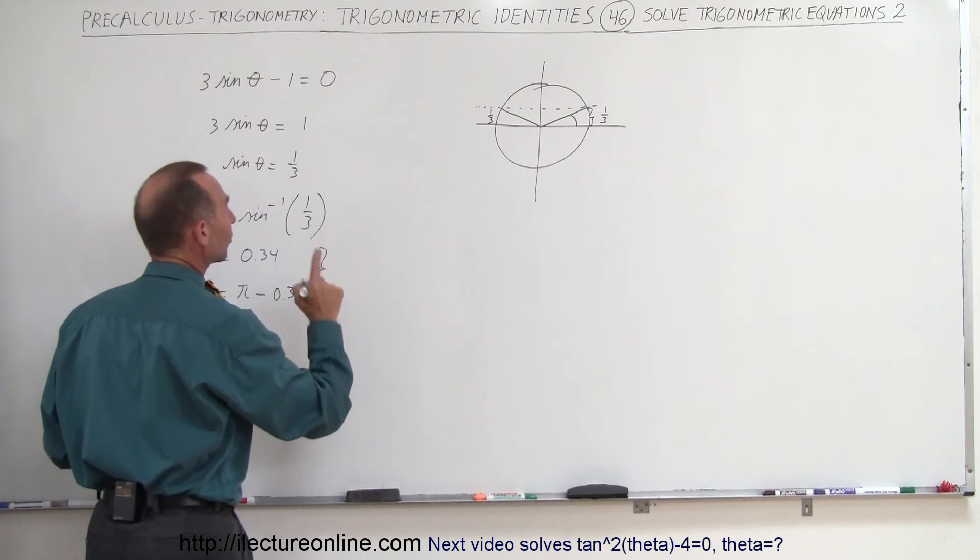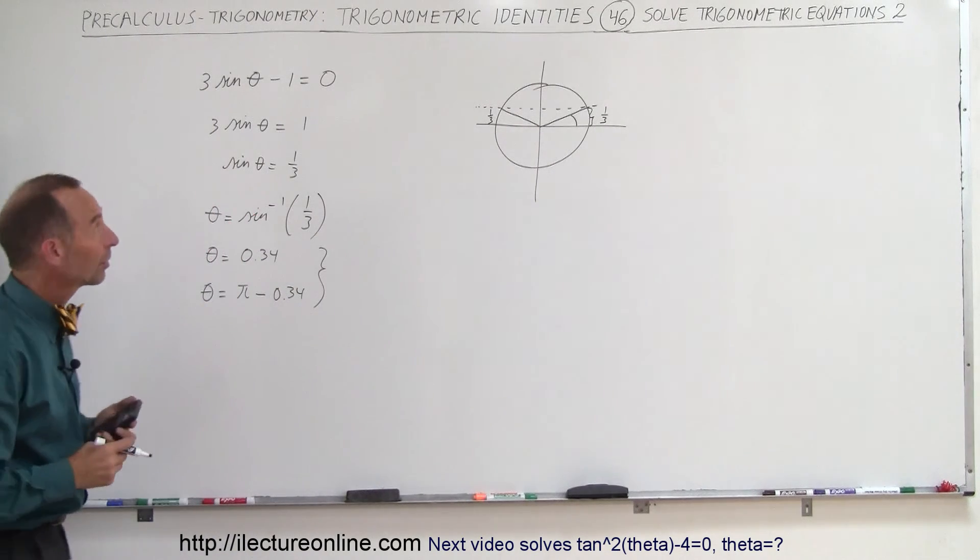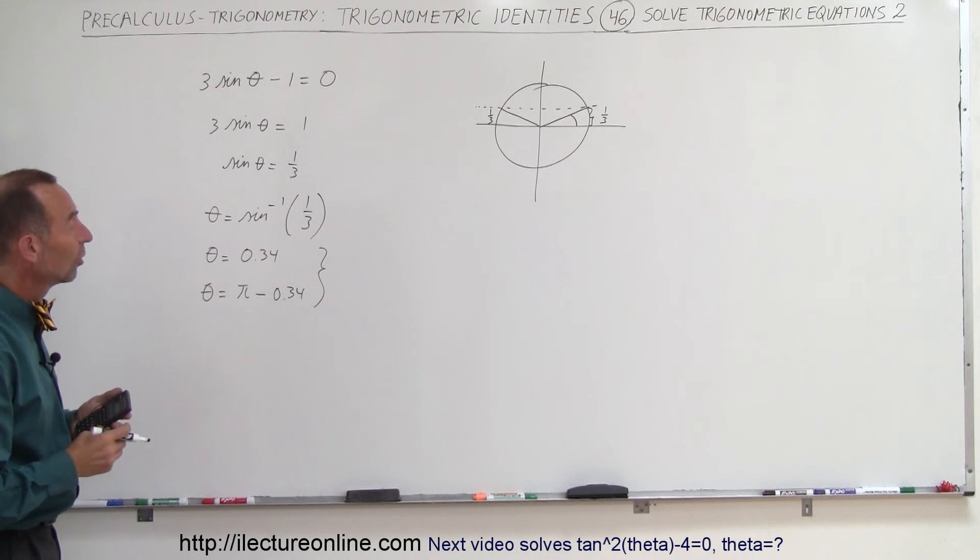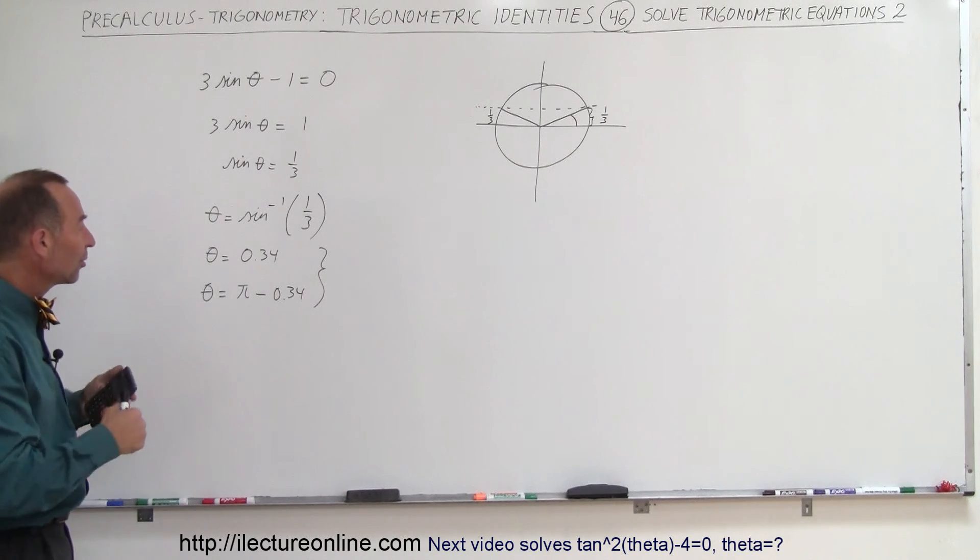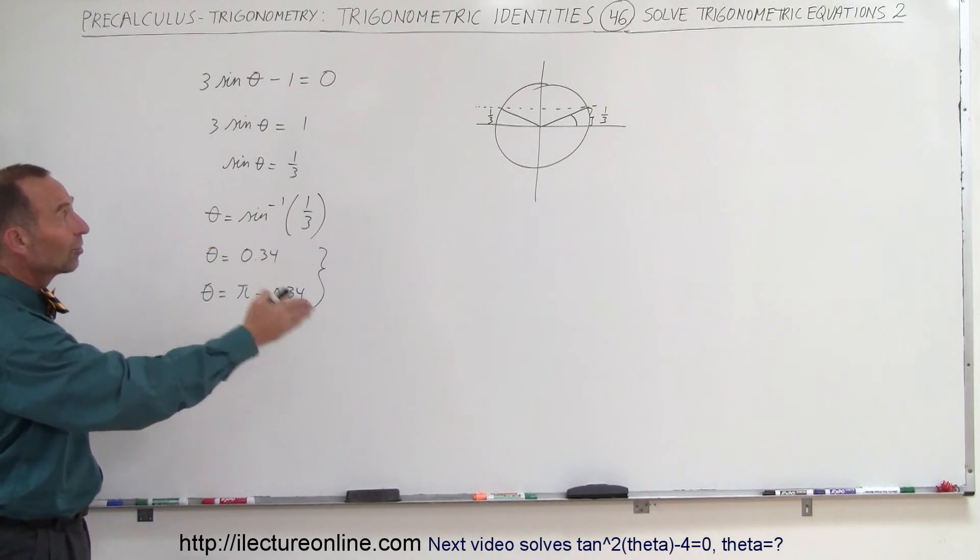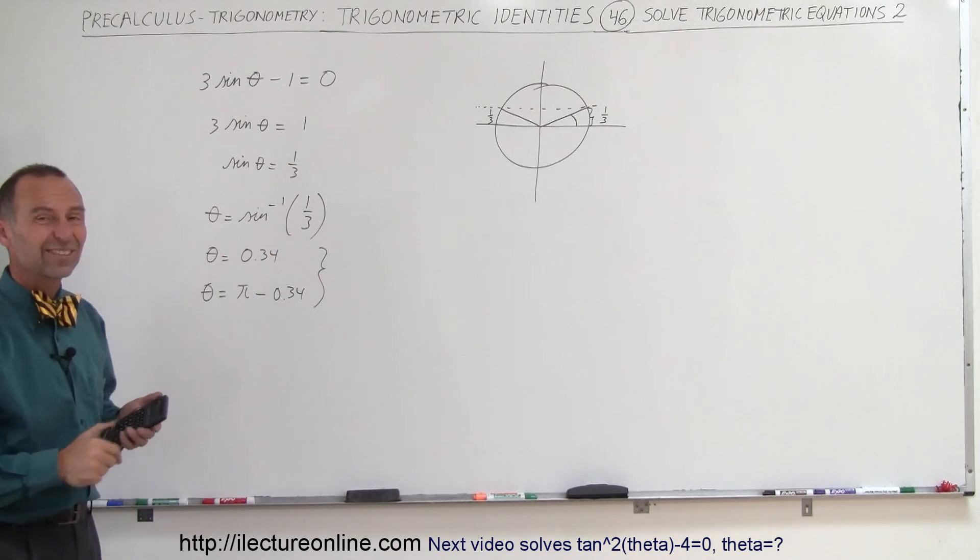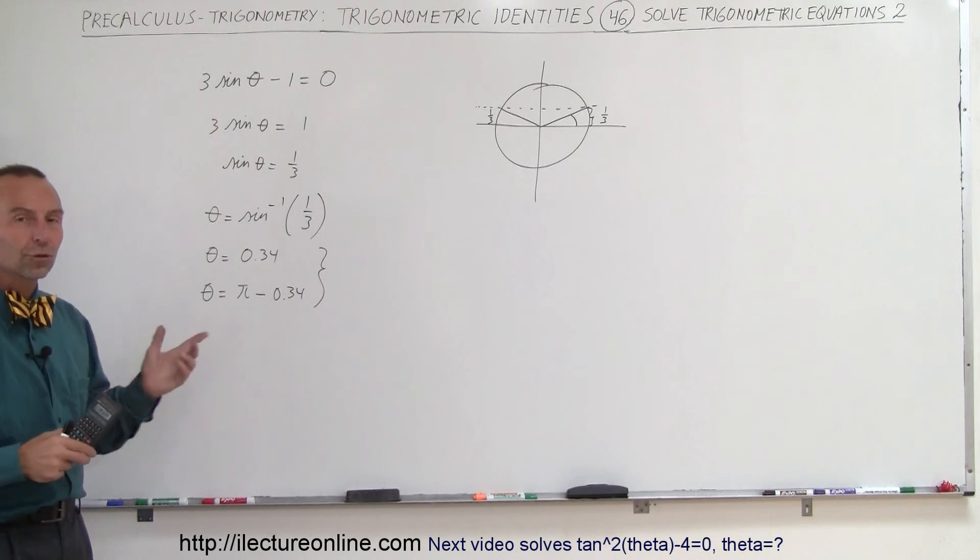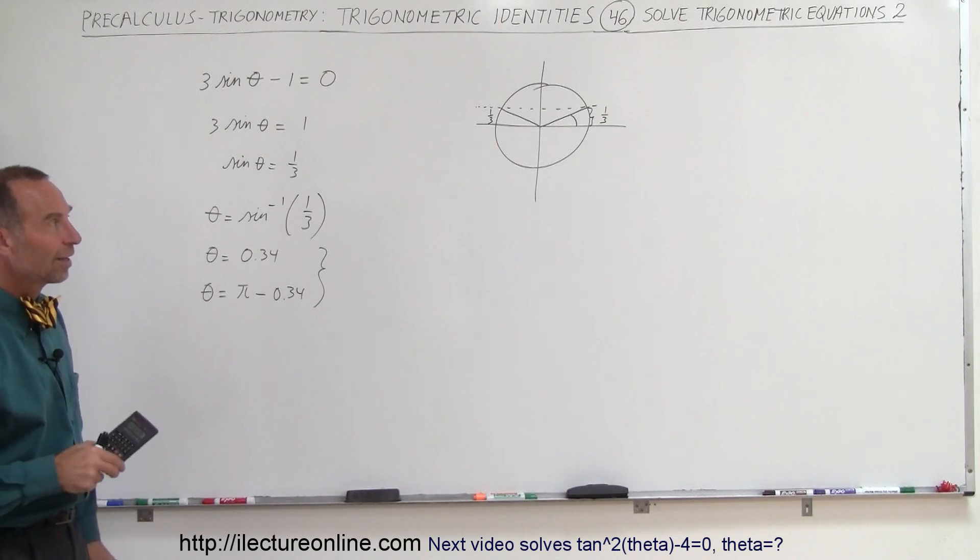So it's not as straightforward as algebra because you get an answer and you think that's it, but in this case there's two possible answers between 0 and 360 degrees. So we have to find both of those, so those are the two answers satisfying that equation.